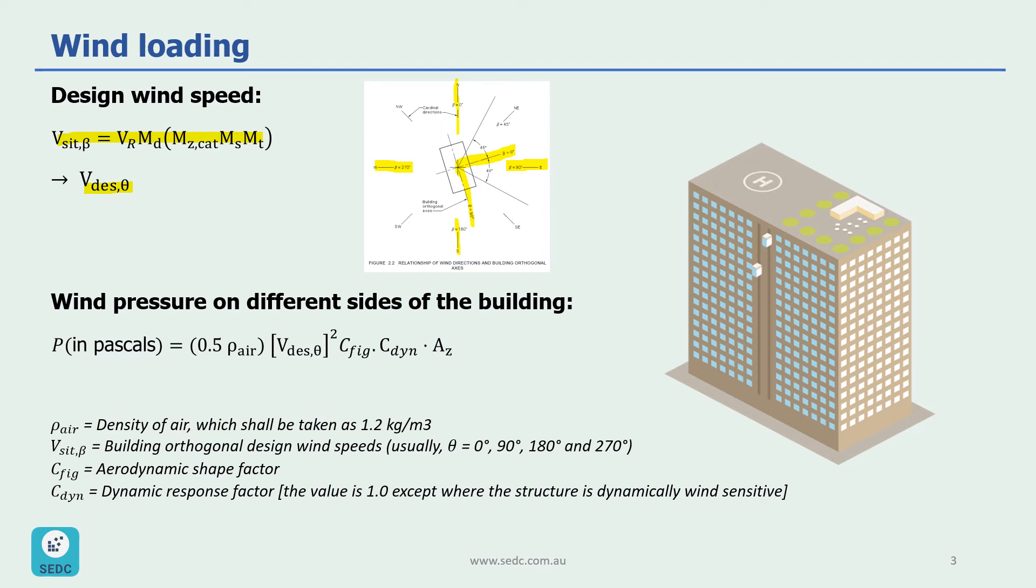The second step is to measure wind pressure on different sides of the building with this formula as you can see in here. P or wind pressure is measured in Pascals and it's a factor of ρ, which is density of the air, which is 1.2 kilograms per cubic meter, V_design,θ which we have explained before.